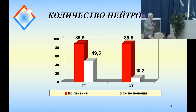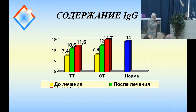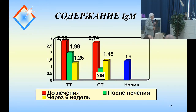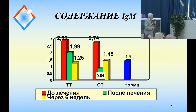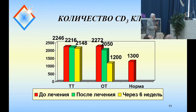Looking at neutrophils after ozone therapy — these are the numbers we obtained. Now talking about the immune system: IgA and IgG compared to norms, we compared to the standards, and after treatment we see good results.